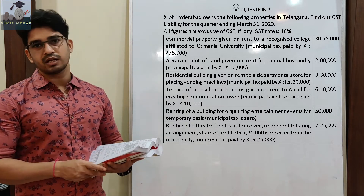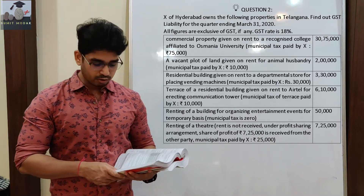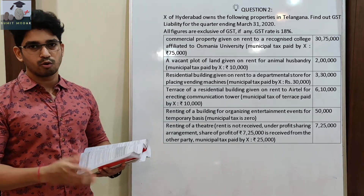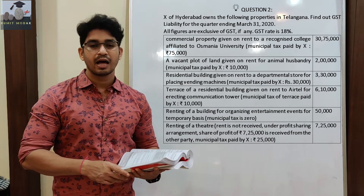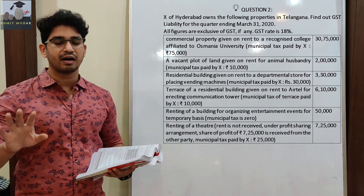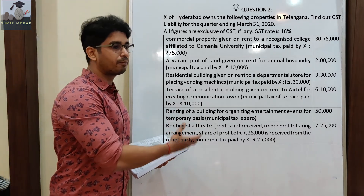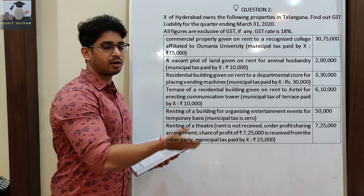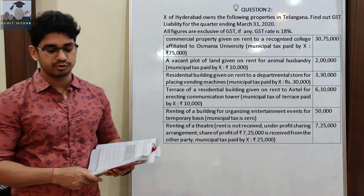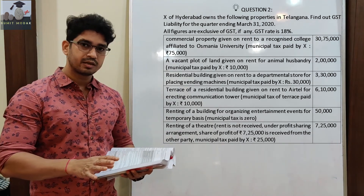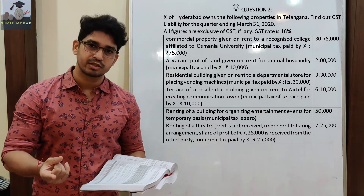एक property है vacant land है — animal husbandry के लिए वो rent पे दिये। उसमें municipal tax उन्होंने पे किया 10,000, और animal husbandry के लोगों से उन्होंने 2,00,000 रुपया collect किया। Residential building given on rent to a departmental store for placing vending machine — वो vending machine होती है जहाँ पे आप पैसे डालते हैं तो chips के packet या cold drinks के bottles मिल जाते हैं। That vending machine is placed in a residential property, मतलब residential property को आप commercial purpose में use कर रहे हैं।